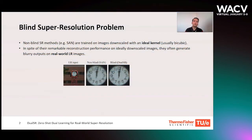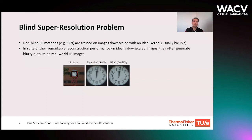There are many advanced methods for single image super resolution in the literature. They usually train a network on images that are downscaled by cubic interpolation. In spite of the remarkable reconstruction performance on bicubically downsampled images, they often generate distorted outputs on real-world low-resolution images.